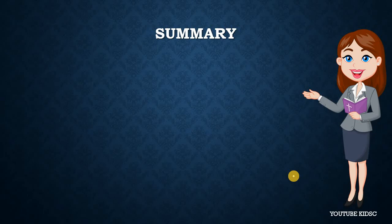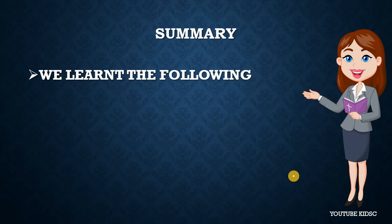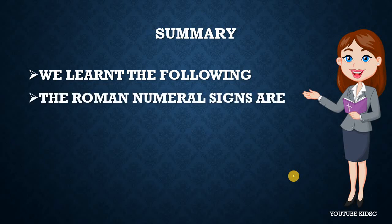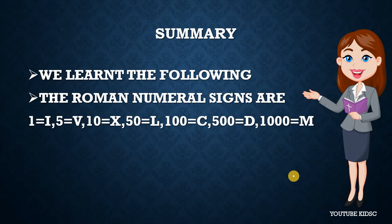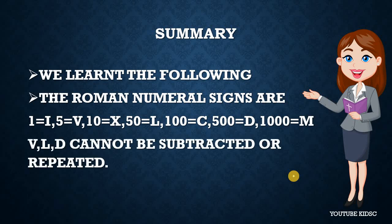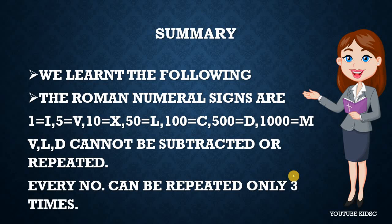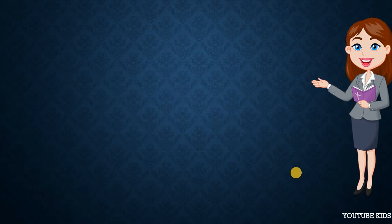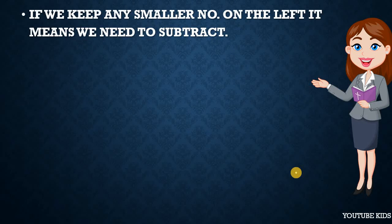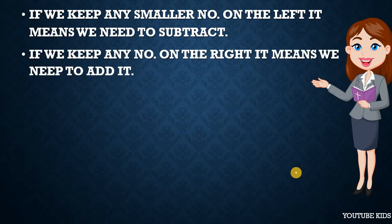It's summary time. We learned the following: The Roman numeral signs are I=1, V=5, X=10, L=50, C=100, D=500, and M=1000. V, L, D cannot be subtracted or repeated. Every number can be repeated only 3 times. If we keep any smaller number on the left, we subtract it. If we keep any number on the right, we add it.